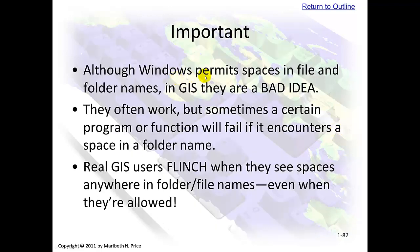Important: although Windows permits spaces in file and folder names, in GIS they're a bad idea. No spaces. Real GIS users flinch when they see spaces anywhere in folder and file names, even when they're allowed. You can use letters, numbers, and an underscore — not even dashes.